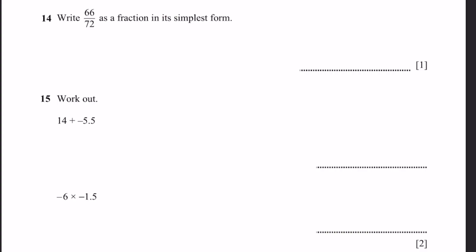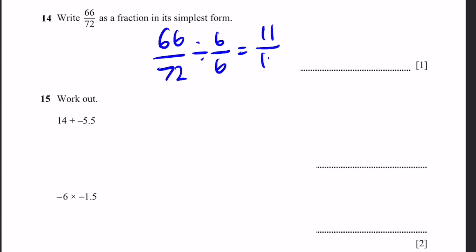Question 14. Write 66/72 as a fraction in its simplest form. Divide both numerator and denominator by 6, since both are divisible by 6. That gives 11/12. You can't simplify it further, so that's the answer.